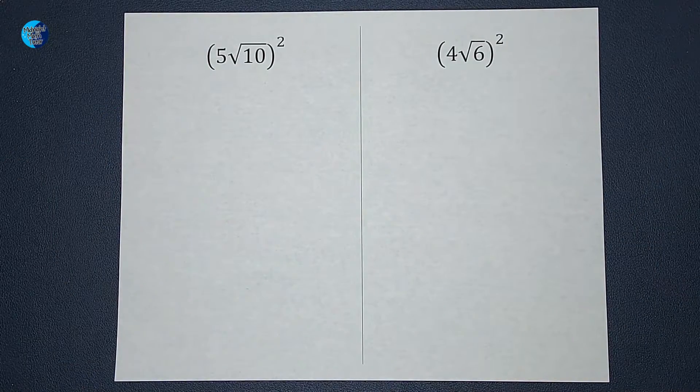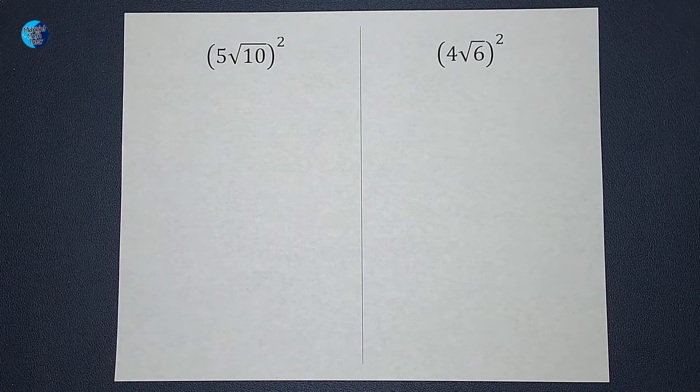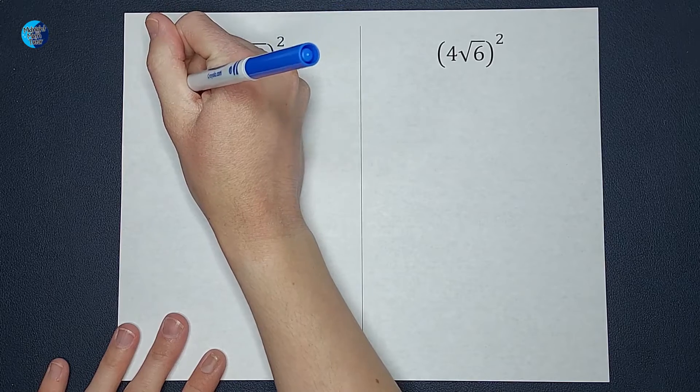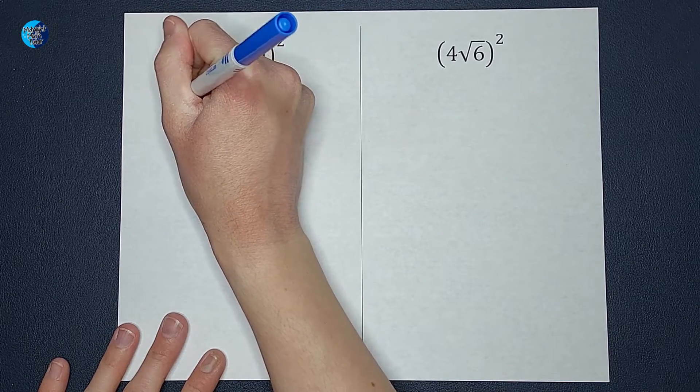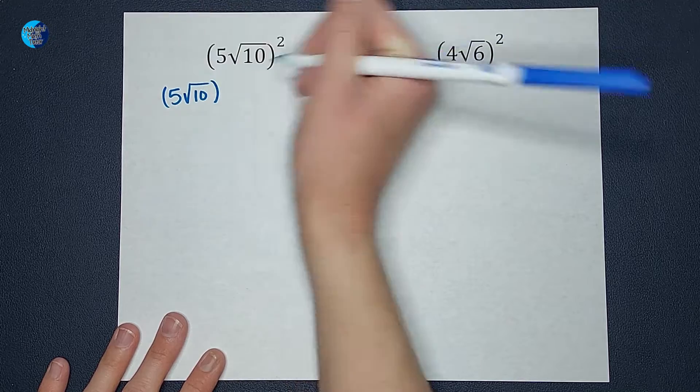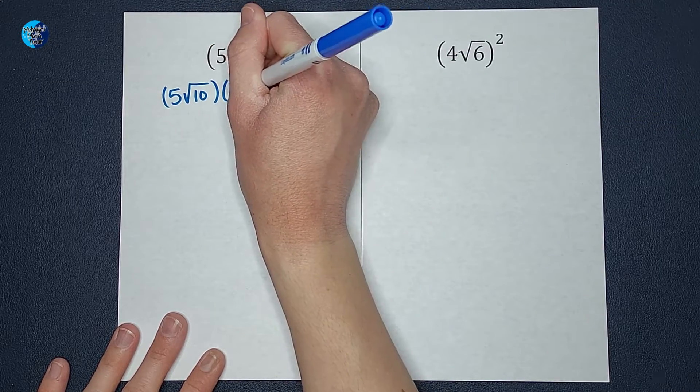So first of all, when I think of things being squared, that means they're being multiplied by themselves. So I could rewrite this as 5√10 times 5√10.